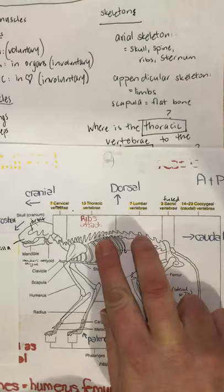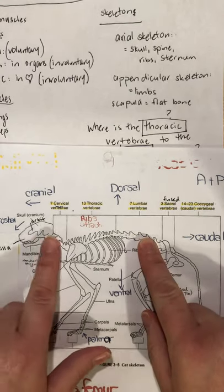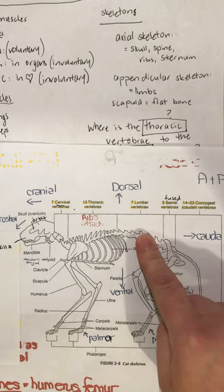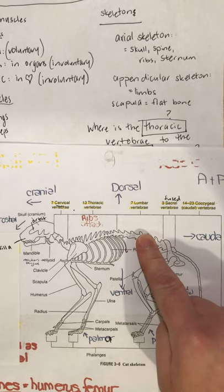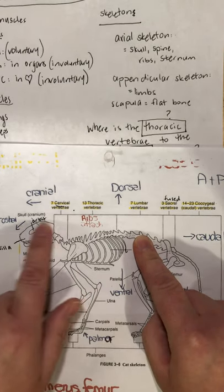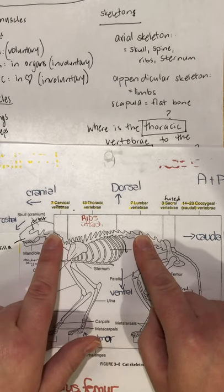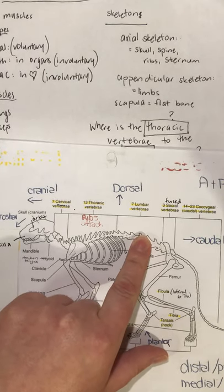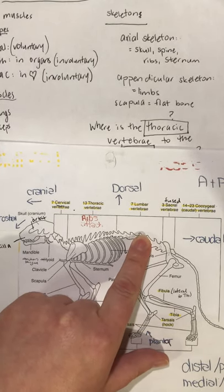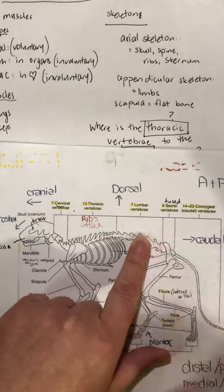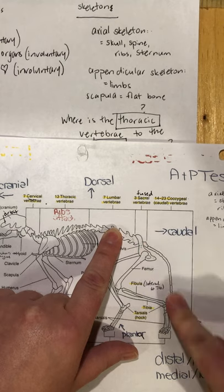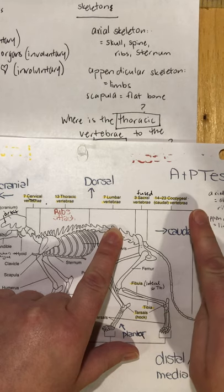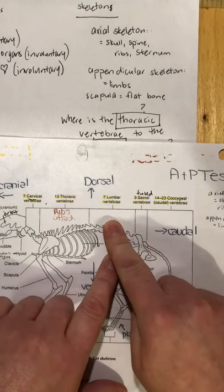It doesn't have to be two things side by side. I could ask: where's the skull in relation to the lumbar vertebrae? The lumbar is the anchor, the skull is the question — it's also cranial. Or: where are the coccygeal vertebrae in relation to the lumbar? The coccygeal vertebrae are the tail — drawing the arrow towards the tail, it's caudal.